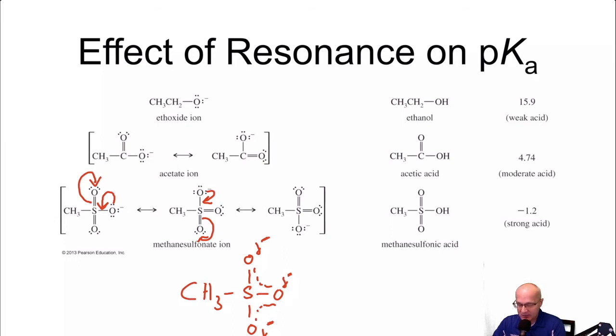Here's acetate. Acetate can resonate, but it can only resonate to one other oxygen, not two others. So there's only two oxygens that can share the negative charge. Notice here, we can share the negative charge with three different oxygens. Here we can only exchange it with two. Notice the pKa difference is dramatic. Negative 1.2 all the way to almost five.